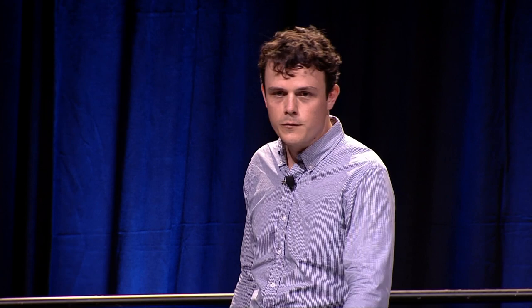Aside from fixing bugs, there's some really exciting stuff that I'm working on right now. One of them is relevant annotations. We've heard the cries for more entities per video, and we're addressing it using relevant annotations. Just like central annotations, relevant annotations are their own class of annotations — they're entities that are relevant to the video and would be of interest to someone watching the video. For example, Shirley's video — most likely mirror would be relevant. Likewise, if we had a video of a live concert, the location of the concert and band members featured in the video would also be relevant. Now, relevant is not related — a different band in the same genre would not be relevant. Relevant is also not low-confidence or low-quality central — it's its own distinct class.